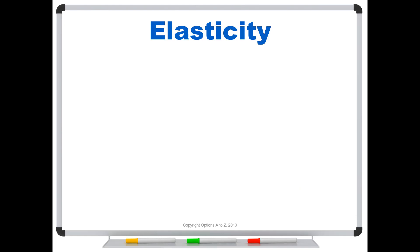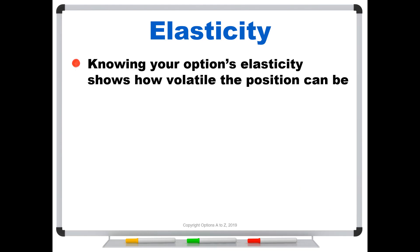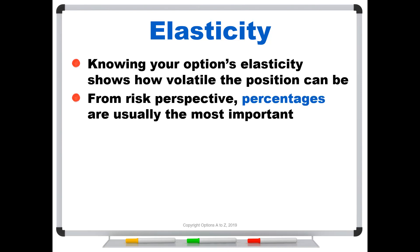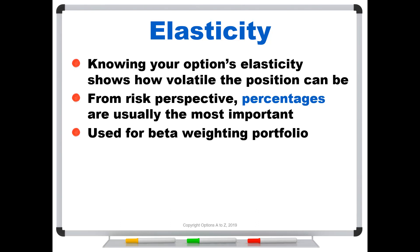So how can you benefit by knowing an option's elasticity? Knowing your option's elasticity shows how volatile the position can be, and it gives you a different look. From a risk perspective, percentages are usually the most important — what matters more is whether your portfolio fell by 7% or 20%, not just whether the stock fell by $3 or $4. We'd like to know how sensitive we are in percentage terms, and elasticity shows you that. Finally, elasticity is an important calculation used for beta weighting a portfolio.